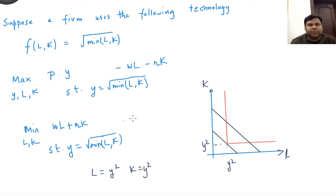Now we are going to substitute it into the cost so that we get the cost function. So C equals (W plus R) times Y square. Now once you have this cost function, the next step is to solve for the supply.